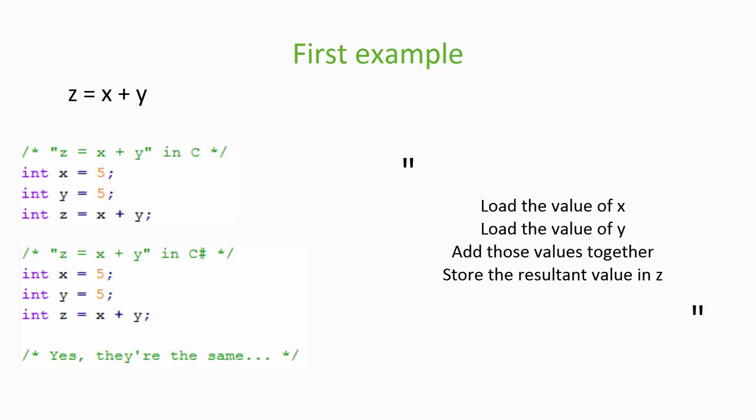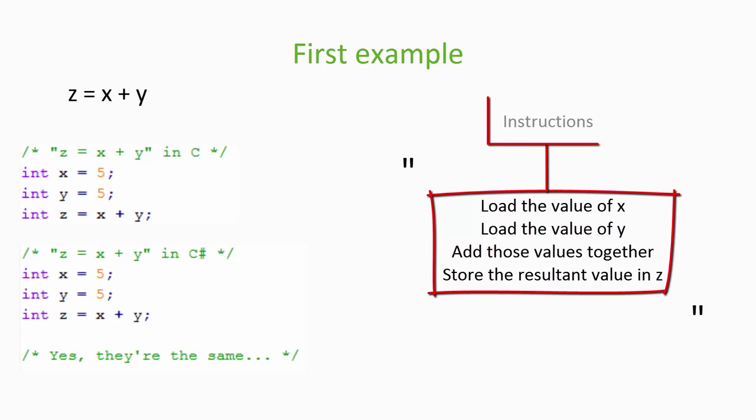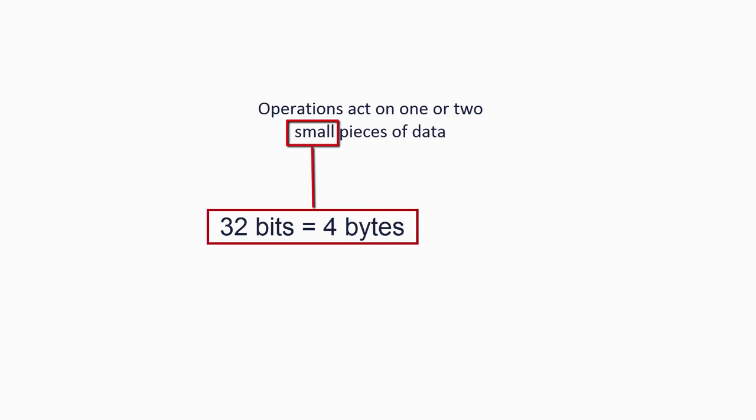Each line is an atomic step that can't be broken down any further. These atomic steps are called instructions. The things which instructions operate on are called data. In this example, the values of x, y, and z are data, and the operations are loading values, addition, and then storing a value. More often than not, operations have just one or two small pieces of data — by small, I mean 32 bits, i.e. 4 bytes, in size.